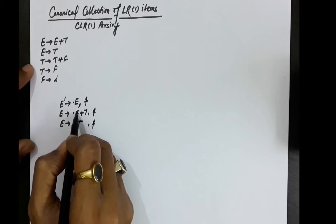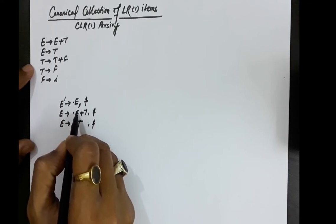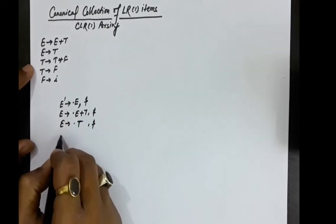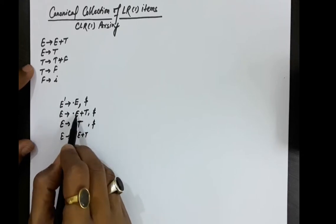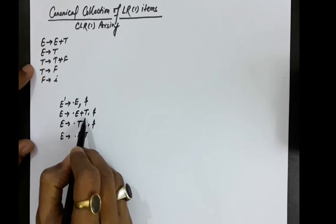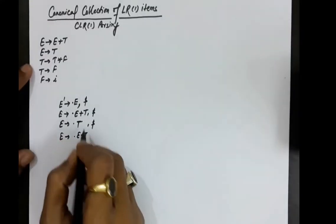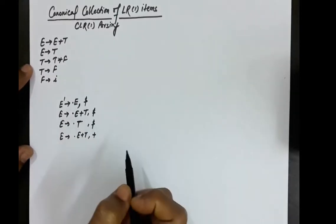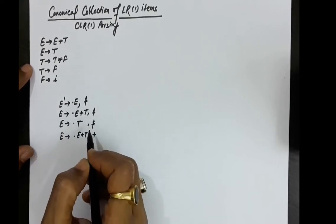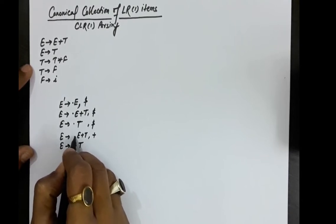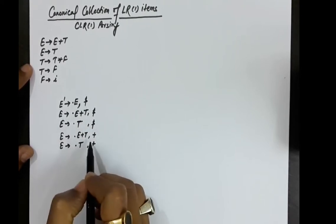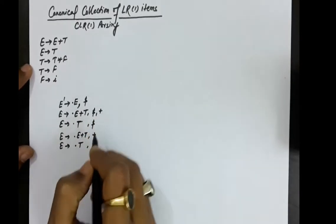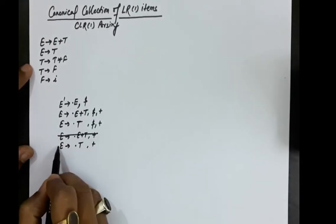This E is also appearing after the dot, so we again write all productions starting with E. The lookahead will be FIRST of plus T dollar, which gives plus. So we add plus as a lookahead here. Similarly, E produces dot T also gets plus as a lookahead. Since these two pairs of productions differ only in the lookahead, we can combine them: we add dollar and plus as lookaheads and need not write those productions again.